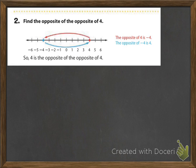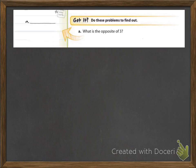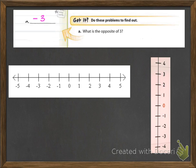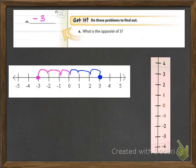Now find the opposite of four. We start by plotting four — that's positive four on the number line. The opposite would be on the other end, which is negative four. So the opposite of four is negative four. You can prove this by plotting on both a horizontal and vertical number line. For the horizontal: three spaces from zero in the original direction lands on three, and three spaces from zero in the opposite direction lands on negative three. The same applies to the vertical number line.